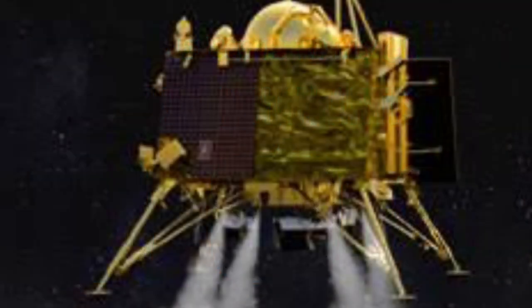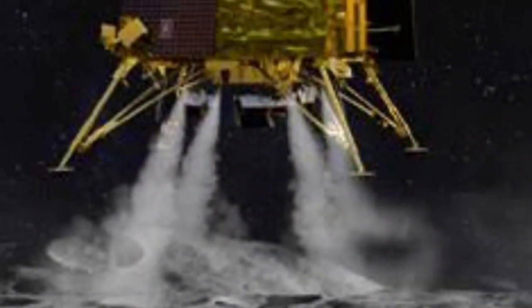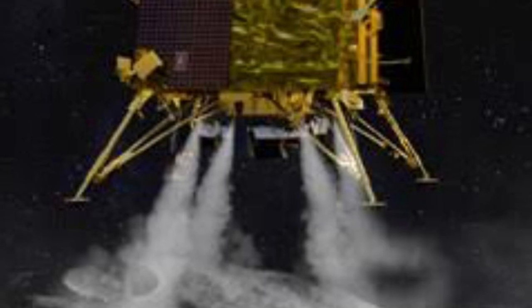ISRO has found out the exact location of Vikram lander which had lost contact with the space agency just 2.1 km above the moon's surface on Saturday.